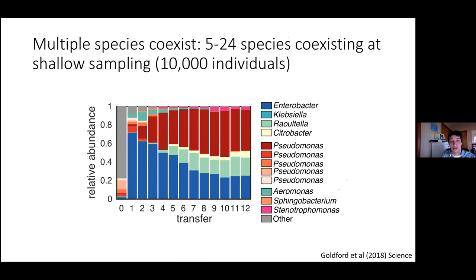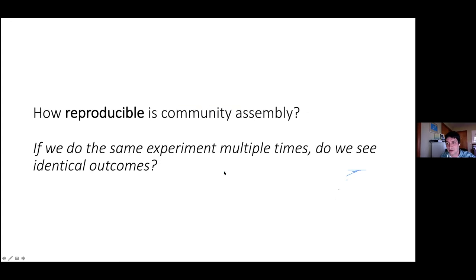The results of a typical experiment show relative abundance of different genera in one enrichment community as a function of transfer. With relatively shallow sampling — about 10,000 random individuals identified — each color represents a different genus. After about eight to nine transfers, community composition stabilizes and becomes quite constant through time. The main question is: if we do the same experiment multiple times, do we find identical outcomes?